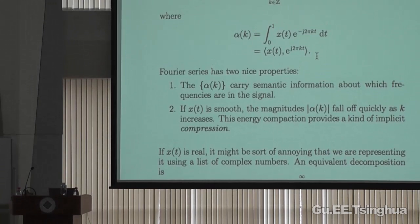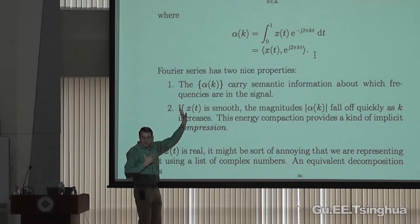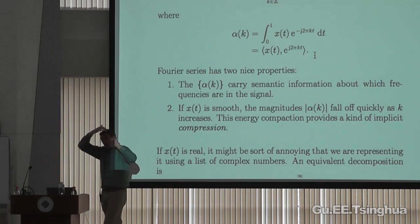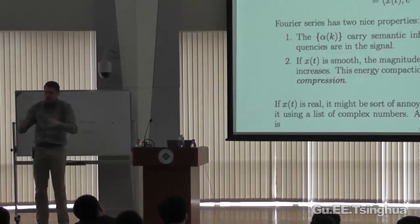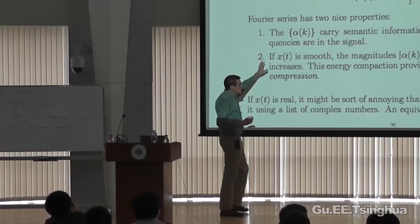The Fourier series translates a continuous-time signal into a discrete list of numbers. Being people in digital signal processing, we like discrete lists of numbers because we can read them into a computer, do operations on them, and spit out another discrete list of numbers. So the first role of the basis is it gives you a list of numbers corresponding to any signal you're interested in.